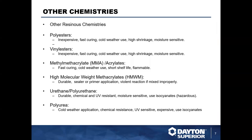There are other resinous chemistries to be aware of. Polyesters are inexpensive and fast curing in cold weather, but have higher shrinkage and are moisture sensitive. Vinyl ester is inexpensive and fast curing with good cold weather application, but also has high shrinkage and is moisture sensitive. MMA (methyl methacrylates) are fast curing and good for cold weather use, but have a short shelf life and are flammable.